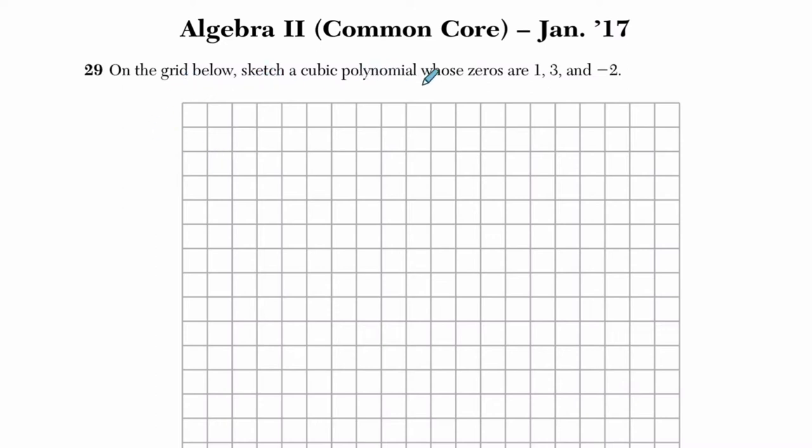Okay, so it tells us to sketch a cubic polynomial whose zeros are 1, 3, and negative 2.